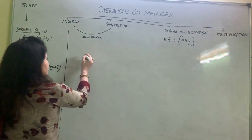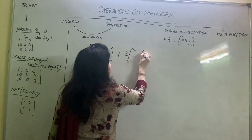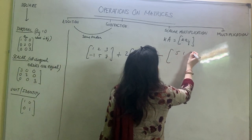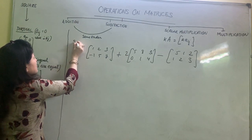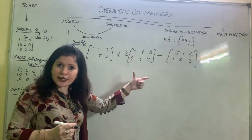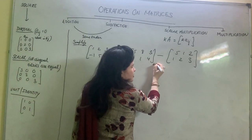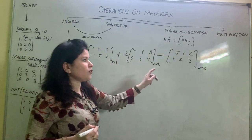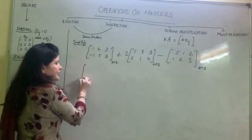Suppose I write: [1, 2, 3; -1, 5, 7] plus 2 times [5, 8, 3; 0, 1, 4] minus [5, 1, 2; 1, 2, 3]. I need to simplify this expression. First, let me check the orders: two-cross-three, two-cross-three, two-cross-three — all the same, so addition and subtraction are possible.